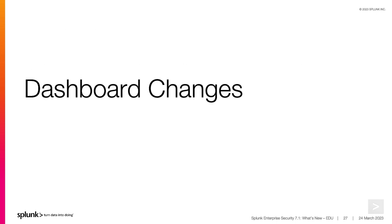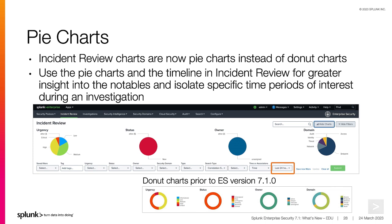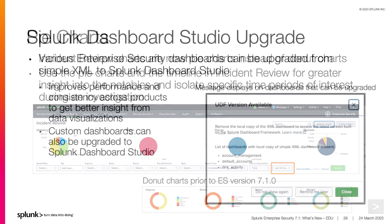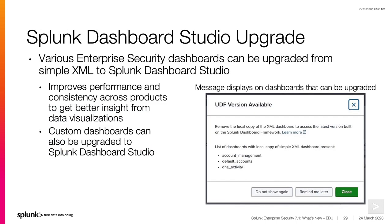Let's take a look at some changes made to the ES dashboards in ES 7.1. The incident review dashboard now uses pie charts instead of donut charts. Use these pie charts and the timeline range in incident review for greater insight into the notable events and isolate specific time periods of interest during an investigation. Also new with ES 7.1 is the ability to upgrade various dashboards from simple XML to Splunk Dashboard Studio, which improves performance and consistency across Splunk products. You can also upgrade custom dashboards to use Splunk Dashboard Studio.